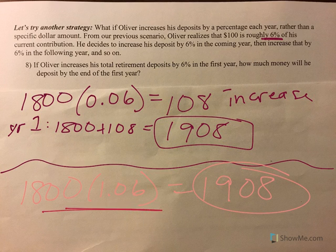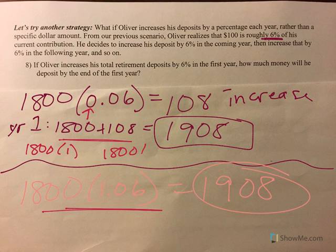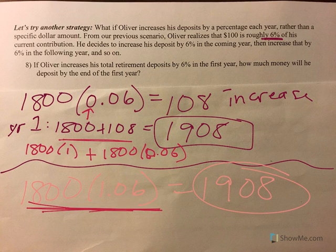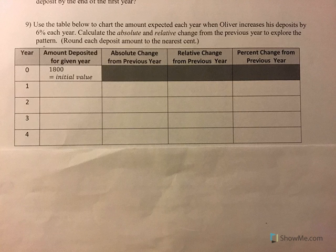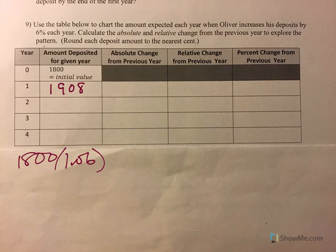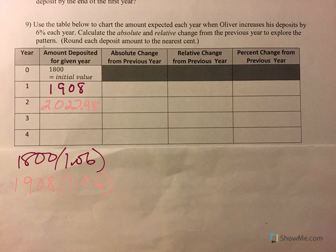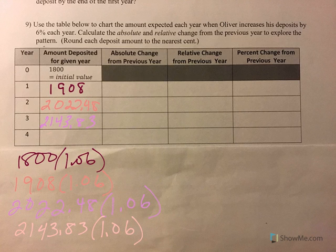The second method — multiplying by 1.06 — lets us skip a step, since 1,800 times 1 is 1,800 and 1,800 times 0.06 is the increase. We can factor out the 1,800 and get the same answer. So we take 1,800 times 1.06 to get $1,908 for year one. For year two: 1,908 times 1.06 equals $2,022.48. For year three: $2,022.48 times 1.06 equals $2,143.83. For year four: $2,143.83 times 1.06 gives $2,272.46. We round to the nearest penny since we're talking about money.